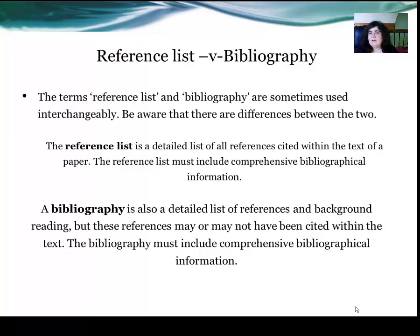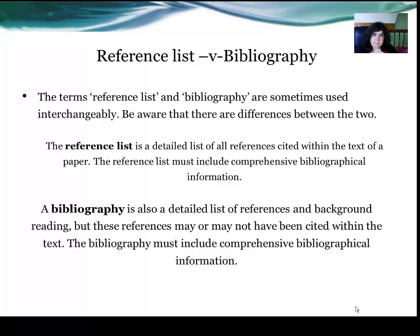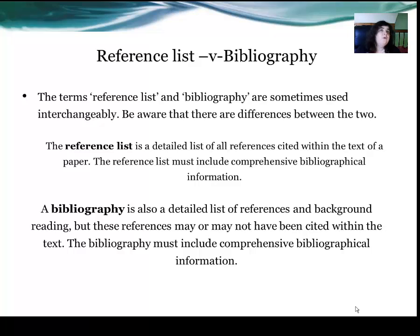I briefly explained the difference between a reference list and a bibliography — they are sometimes used interchangeably. But there are differences. The reference list is a detailed list of all references cited within the text of a paper. A bibliography is also a detailed list, but it includes the reference list plus those references that have not been cited within the text but have been used as influential pieces that may have given guidance to other papers or theories.